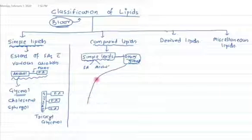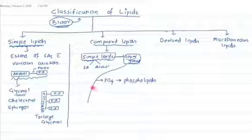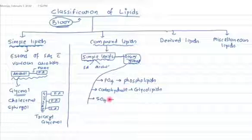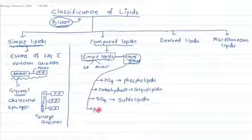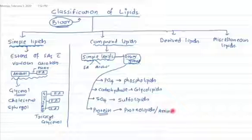In human biochemistry, the other group may be a phosphate — we call it a phospholipid. If the other group is carbohydrate, we call it a glycolipid. If it is sulfate, we call it a sulfolipid. If the other group is a protein and protein and lipid are bound, we call it a proteolipid, or also an amino lipid.